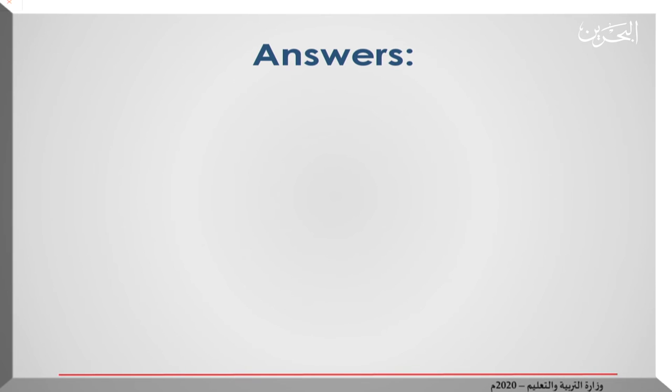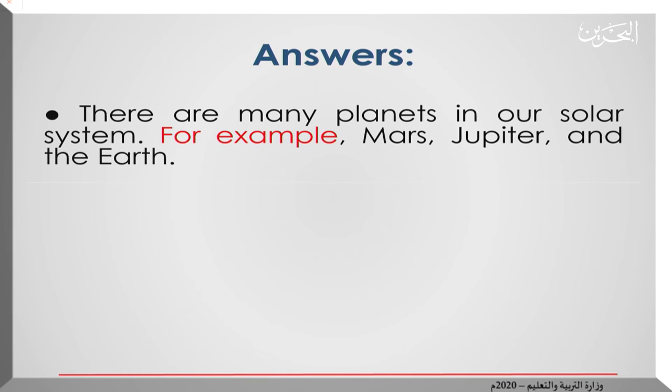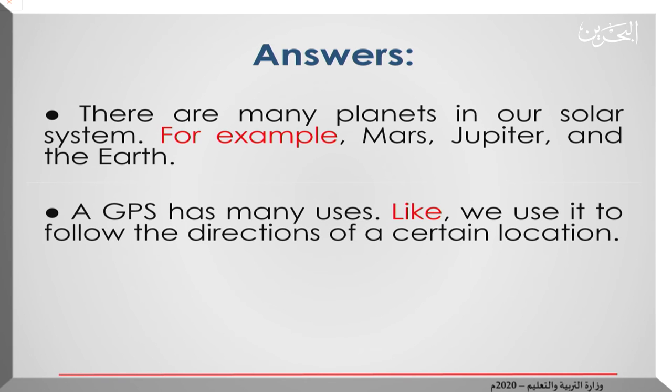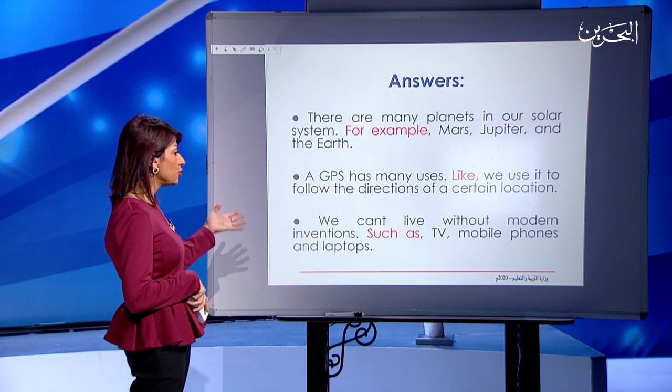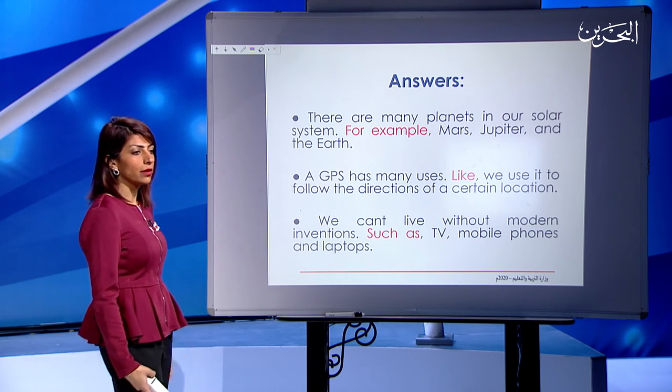So here are the answers. Let's see. The first one is: there are many planets in our solar system, for example, Mars, Jupiter, and the Earth. Second one: a GPS has many uses, like, we use it to follow the directions of a certain location. This is one of the uses of the GPS. You mentioned it by using the expression like to emphasize an example. Let's move to the last one, which is: we can't live without modern inventions such as TV, mobile phones, and laptops. So I am giving an example on the inventions, and I said such as, then I listed the possible examples.